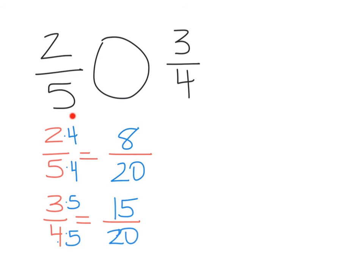But in this problem up above, which one was greater? The three-fourths was greater than two-fifths. So I'm going to make sure to put in that three-fourths is greater than two-fifths. But again, I'm going to read it from left to right: two-fifths is less than three-fourths.